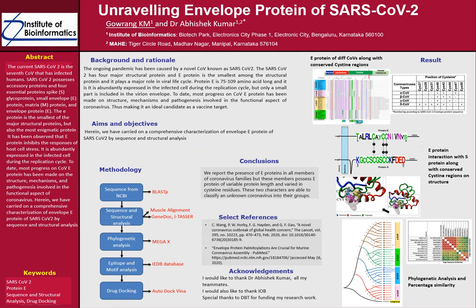From the phylogenetic tree, we can observe the divergence of each genus from their common ancestor. We also constructed percentage similarity and percentage identity tables. Percentage identity is the ratio of matched residues to the total length of the alignment, whereas percentage similarity is the sum of both identical and similar residues.